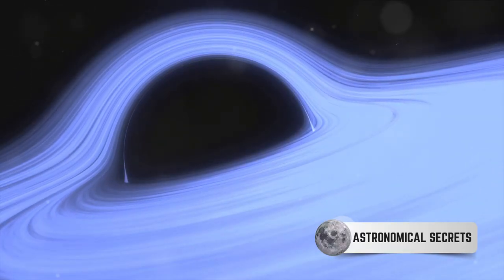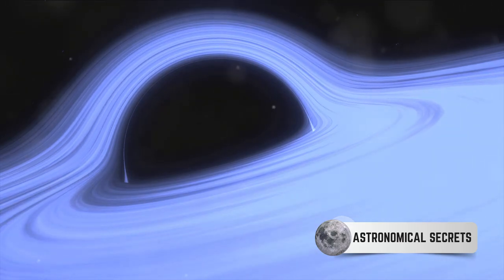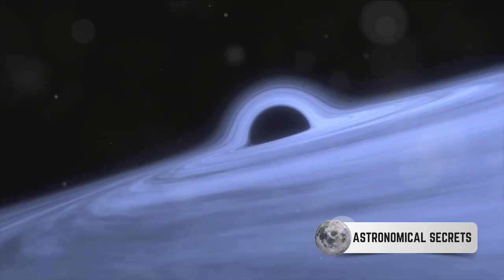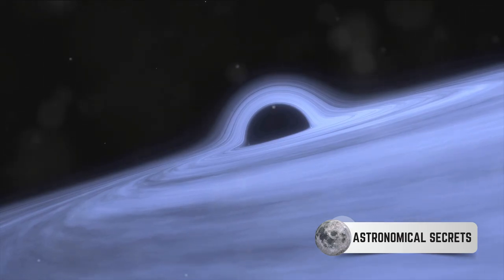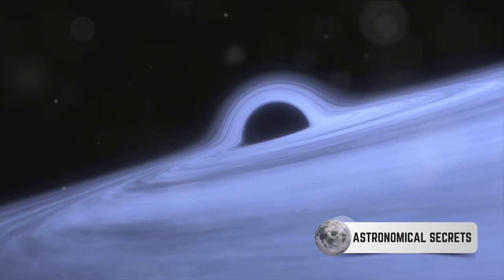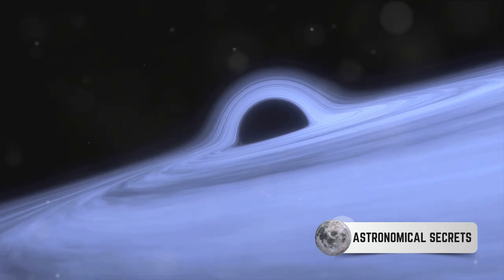But here's the kicker. These accretion disks aren't just theoretical constructs, they're very real and have been observed in our universe. Scientists have spotted these luminous disks around black holes, shedding light on the enigmatic nature of these cosmic giants.